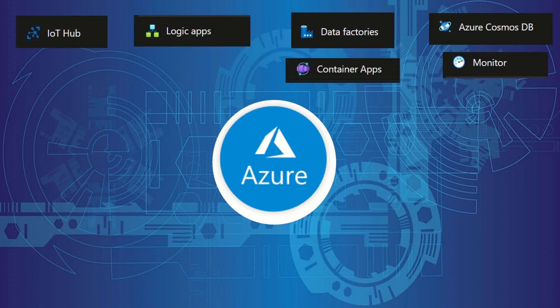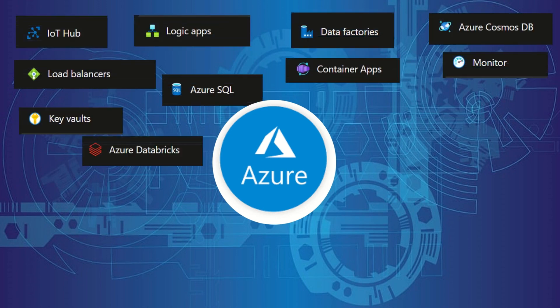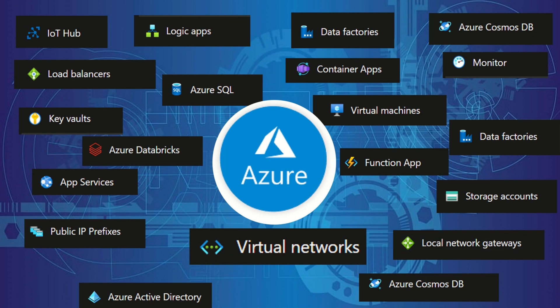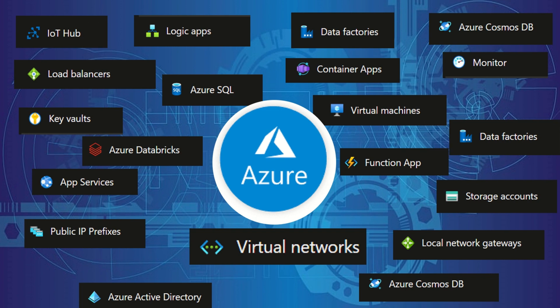Building an application in Microsoft Azure does not mean spinning isolated resources or services. Any Azure resource, from as basic as a virtual machine to the more advanced like IoT Hub, needs to communicate with other resources in order to build any real business application — and none of this communication is possible without building a stable network.